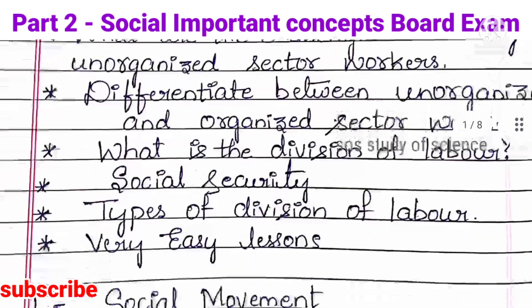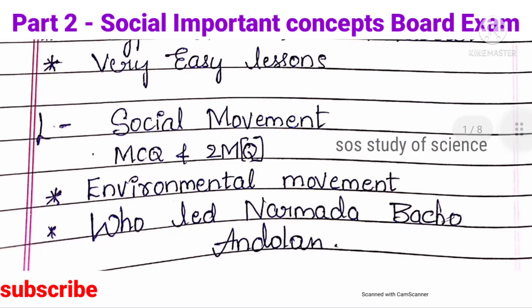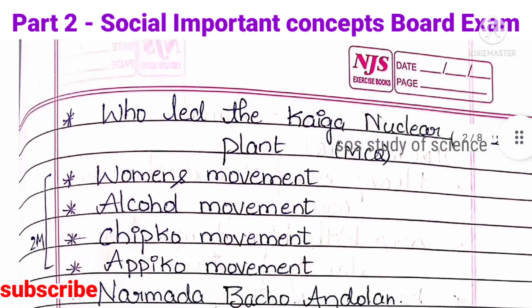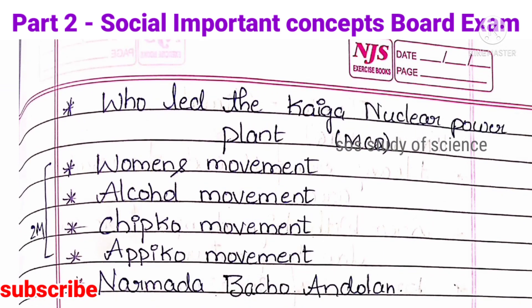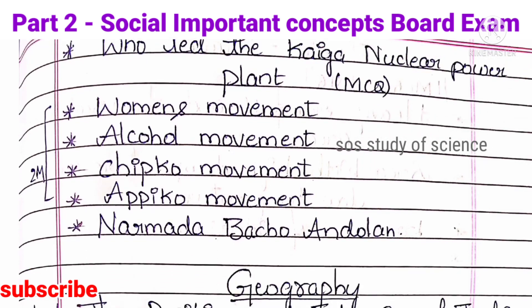Moving to the next lesson — Social Movement. Here you can expect MCQ or 2-mark questions. The most important topics are Environmental Movement. MCQ questions may ask: Who led the Narmada Bachao Andolan? Who led the Kaiga nuclear power plant movement? For 2 marks, they can ask about Women's movement, alcohol movement, Chipko movement, Apiko movement, and Narmada Bachao Andolan. Don't forget to study these concepts. This is all about sociology.